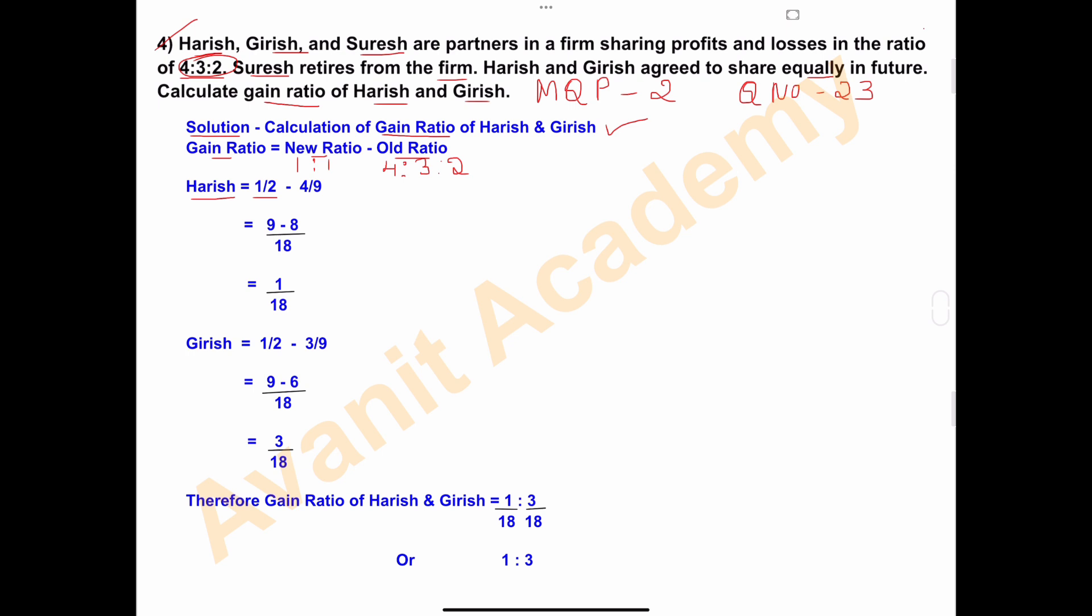Harish's share is 4. Harish's old ratio is 4 upon 9—4 is the share of Harish, total is 4 plus 3 plus 2 equals 9. So Harish's new ratio is 1 upon 2, and old ratio is 4 upon 9.